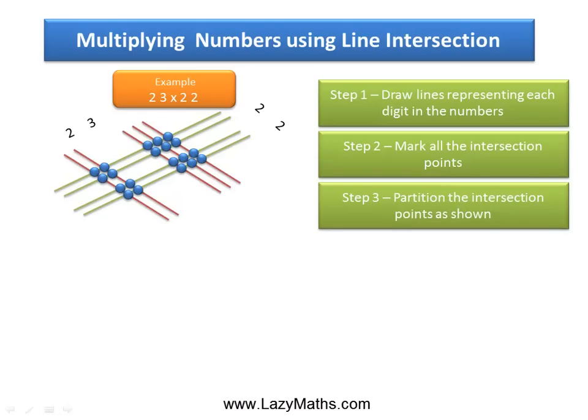The next step is to partition the intersection points, as shown. So we have this one group here, the other group is right here, and then we have the middle group.